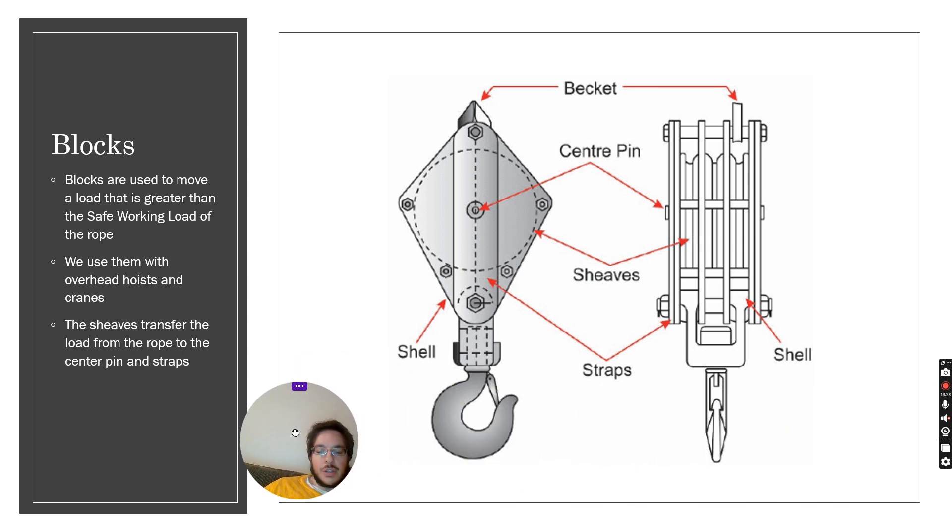Now we also use blocks. Blocks help us move a load that is bigger than the safe working capacity of the rope. We can use these with a hoist or a chain and the reason is because the block has sheaves, multiple sheaves and the rope passes through these sheaves and so they reduce the actual load. We can divide by three basically. So if our rope is rated for a thousand pounds we can use this now to lift three thousand pounds because the load is being transferred now from the rope to the actual center pin of the block.